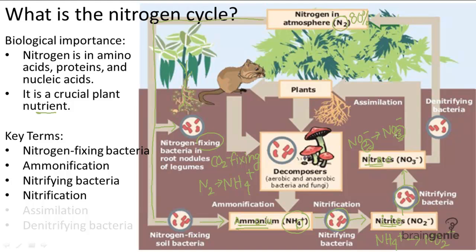Now, moving on to the next part of the nitrogen cycle. After nitrogen is converted into nitrates, there are two possibilities. The first is assimilation, where nitrates end up being absorbed into plant roots and used in plants for their nutrients. After assimilation, the plants can then be eaten by different animals, so the nitrogen is passed to those animals. Both the plants and the animals, when they decompose, can add nitrogen back into the soil.